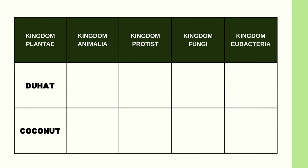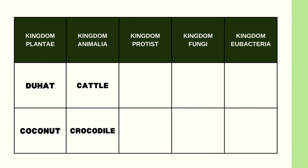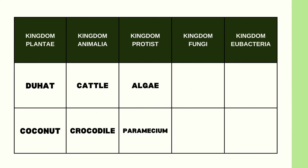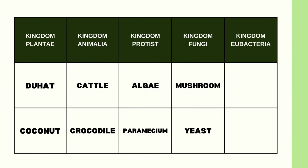Niyog and coconut belong to the kingdom Plantae. Cattle and crocodile belong to the kingdom Animalia. Algae and paramecium belong to the kingdom Protista. Mushroom and yeast belong to the kingdom Fungi. And lastly, bacteria and bacilli belong to the kingdom Bacteria.